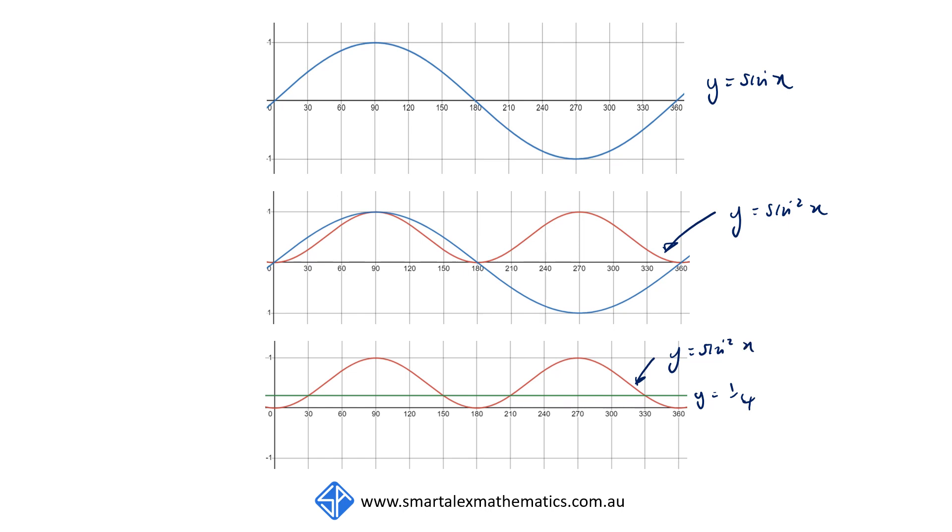And there are four points of intersections between zero degrees and 360 degrees, which occur at 30 degrees, 150 degrees, 210 degrees, and 330 degrees. And these correspond to our four solutions.